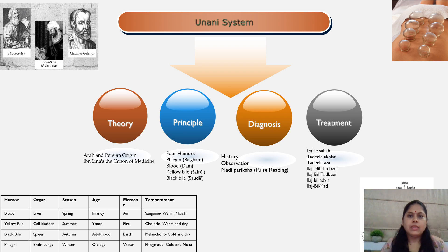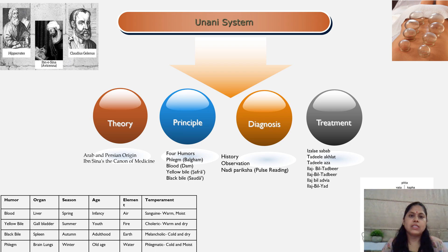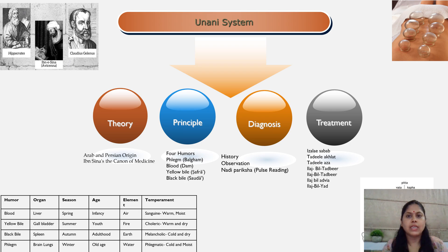An abnormality in the humors is expected to lead to disease conditions in the human body. Diagnosis of various diseases is made after observation of seven components: elements, temperament, humors, organs, faculties, spirits, and functions. The Yunani physician — Hakim — takes a detailed history and then decides the treatment.